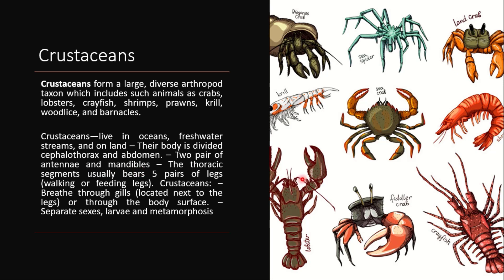The thoracic segment usually bears five pairs of legs used for walking and feeding. Crustaceans breathe through gills located next to the legs and through the body surface. Sexes are separate, larvae are present, and metamorphosis also occurs.